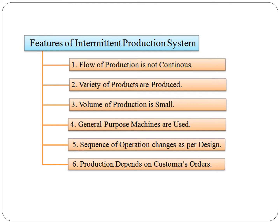There are some features of intermittent production systems. Flow of production is not continuous because production is based on customer orders. A large variety of products is available in this production system but the volume of production is small. General purpose machines are used. The sequence of operation changes as per the design and the demand of the customer. Production depends on customer's order.